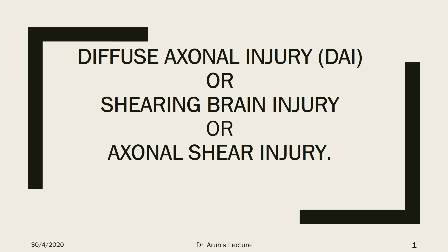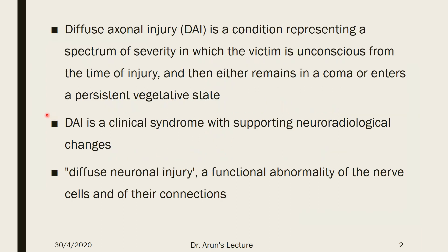Good morning. Today's topic is about diffuse axonal injury. The synonyms to this terminology are shearing brain injury or otherwise axonal shear injury. Diffuse axonal injury is a condition representing a spectrum of severity in which the victim is in a state of unconsciousness from the time of injury and either remains in a state of coma or enters into a persistent vegetative state. It is also a clinical syndrome with supporting neuro-radiological changes in the axon after sustaining an injury. The terminology diffuse axonal injury refers to a functional abnormality of a nerve cell and its connections.